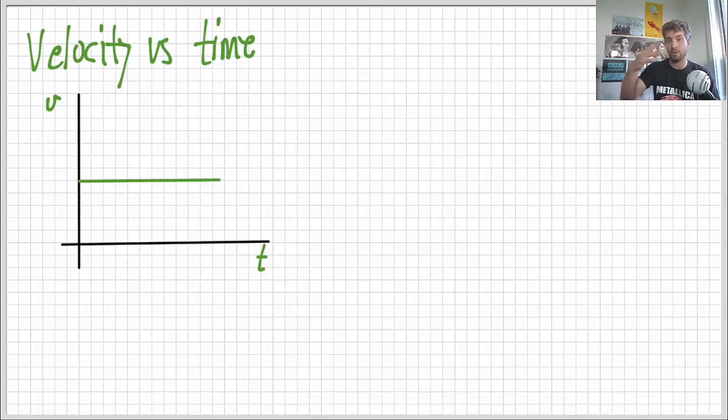It could be constant zero velocity. It could be not moving, but for that to be the case, the line would have to be right here along the axis with zero velocity. This one shows that we have some velocity, so we have a constant velocity, and so constant movement.